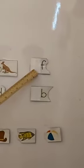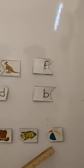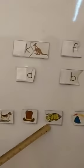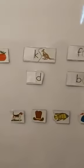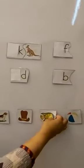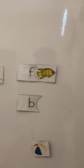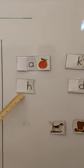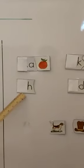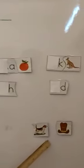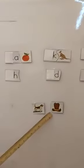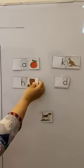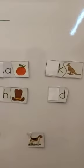Now the next letter is F. F says F. Now let's find the friend. Oh yes, this is fish! Let me join it like this. F for fish. Now which is the next letter? Next letter is H. Now let's find its friend. Oh yes, hat! I'm going to match H with the picture of hat.